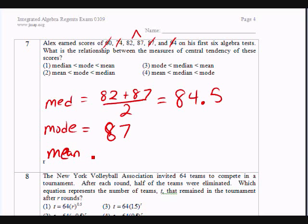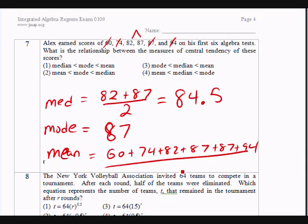Let's find the mean. The mean you're going to add up all these numbers. 60 plus 74 plus 82 plus 87 plus 87 plus 94 divided by the amount of numbers we have, which is 6. And you will get 80.67.